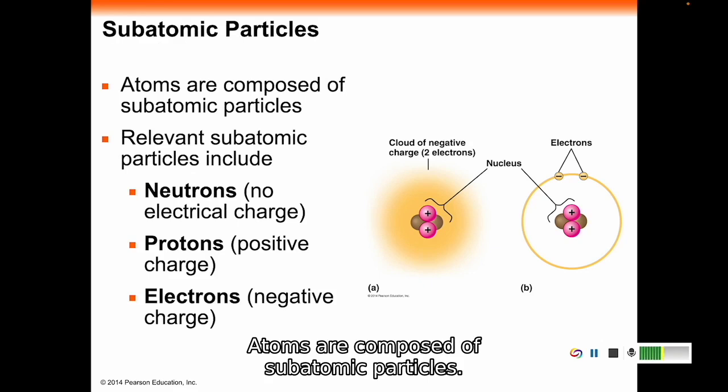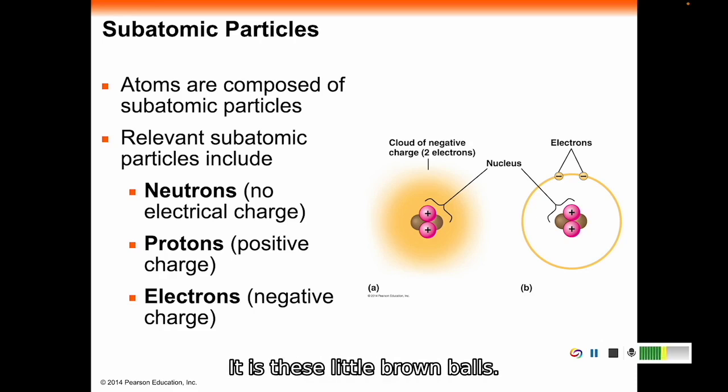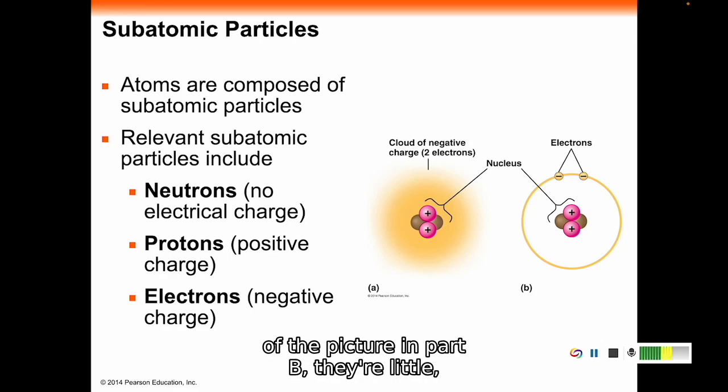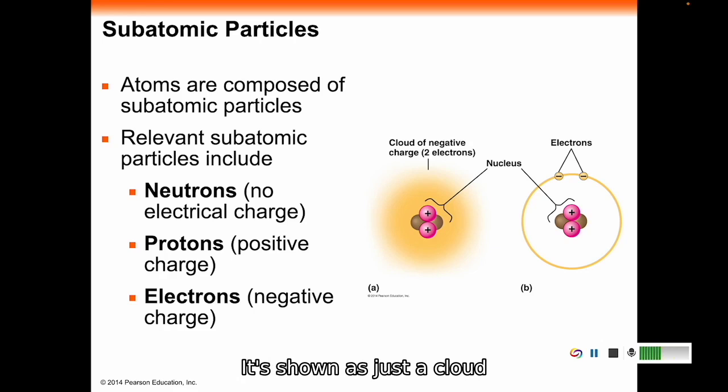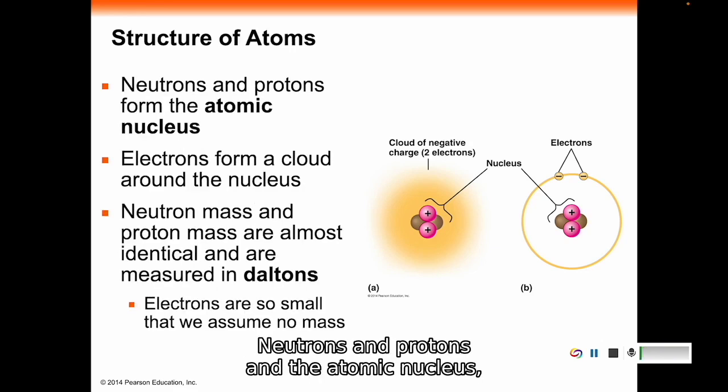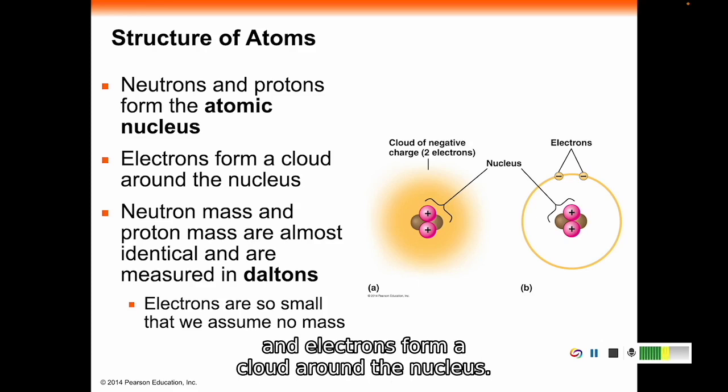Atoms are composed of subatomic particles, meaning below the atomic level. We're going to talk about three of them: neutrons, protons, and electrons. Neutrons have no electrical charge and are found in the nucleus of an atom. The nucleus is the center part. In this picture, it is these little brown balls. Protons have a positive charge. They are also found in the atomic nucleus. In this picture, the little pink balls with little pluses on them. Electrons have a negative charge. Electrons are always moving around. On the right side of the picture, they're these little circles with minuses. On the left side picture, to represent that they're just moving all around, it's shown as just a cloud of electrons.